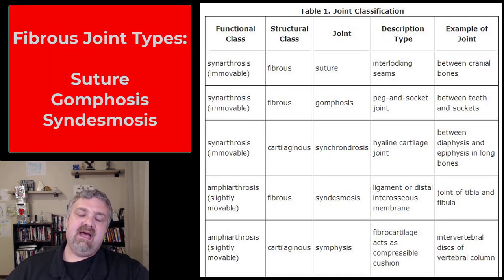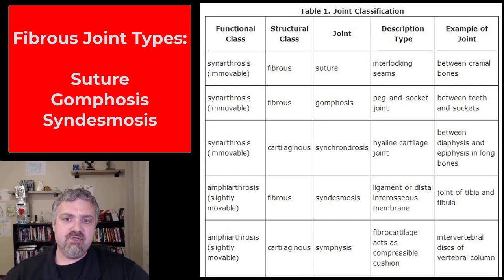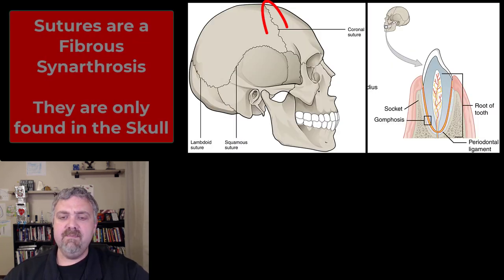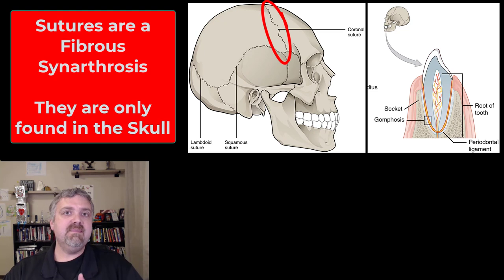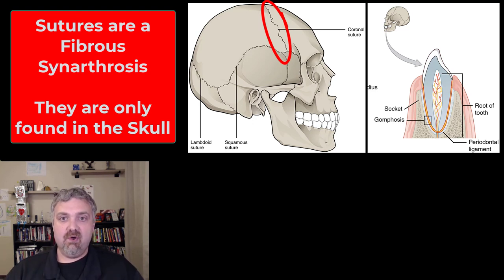The three types of fibrous joints are the suture, the gomphosis, and the syndesmosis. The suture is an example of a fibrous synarthrosis — held together by dense fibrous connective tissue and it's an immovable joint. Sutures are only found in the skull; these are the four sutures you learned about that hold your skull bones together.